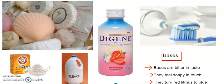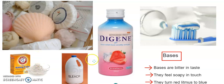Baking soda and magnesium hydroxide are substances that we can eat — they are also bases. Baking soda is used in making cakes and biscuits. When you taste baking soda it is a little bit bitter. So bases are bitter in taste. They feel soapy — when you rub with a wet hand between your fingers it has a soapy touch. They turn red litmus to blue.